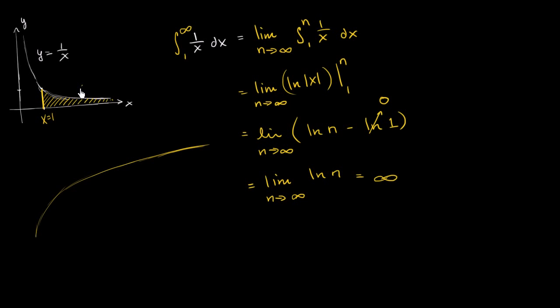So here we do not have a finite area. This is an infinite area. It's interesting. When this function decreased faster, when it was 1 over x squared, we had a finite area. Now we have an infinite area.